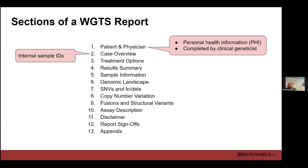We start off with patient and physician — this is where personal health information goes: patient name, date of birth, name of referring physician, all that stuff. I do not see it; I don't want to see it; I don't need to know it. It gets filled in by the clinical geneticist, who is cleared to handle this information, as a final step before it is sent back into the clinic.